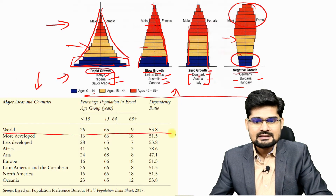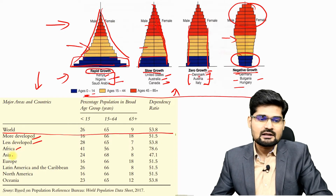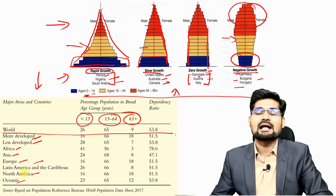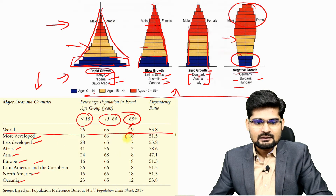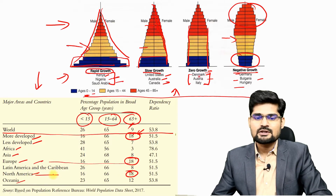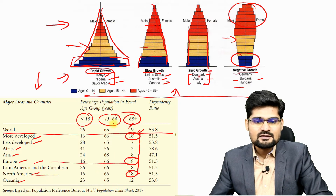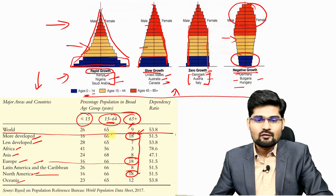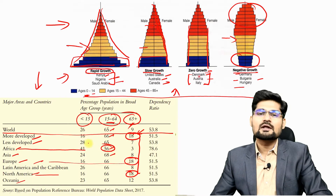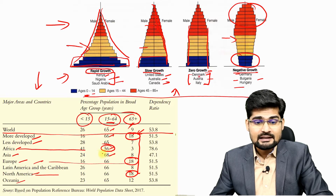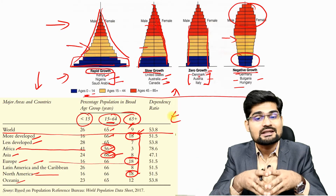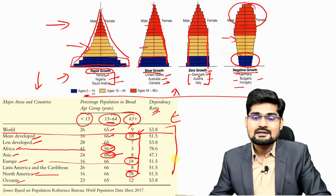Looking at global statistics for more developed and less developed regions, as well as Africa, Asia, Europe, the Americas and Oceania — aging population is highest in more developed countries, Europe and North America. The working population aged 15 to 64 is highest in Asia at 68%, while Africa has the lowest proportion of working-age population. This data allows us to analyze the dependency ratio both spatially and temporally.